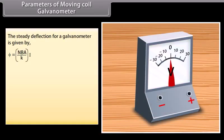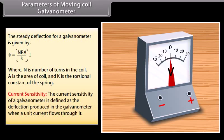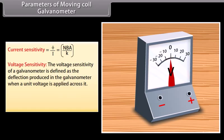Parameters of Moving Coil Galvanometer: the steady deflection is given by φ = (NBA/K) × I, where N is number of turns, A is the area of coil, and K is the torsional constant of the spring. The current sensitivity is defined as the deflection produced when a unit current flows through it, equal to NBA/K. The voltage sensitivity is defined as the deflection produced when a unit voltage is applied, equal to NBAi/(Kv).